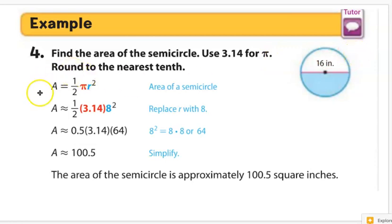So first of all, let's bring up our area of a semicircle formula. So the area is 1 half times pi radius squared.